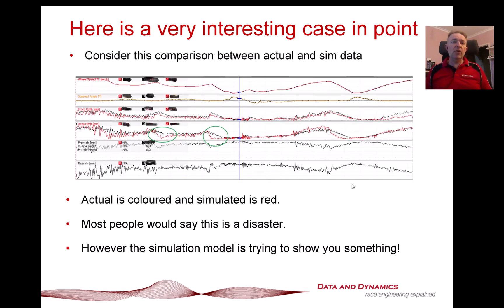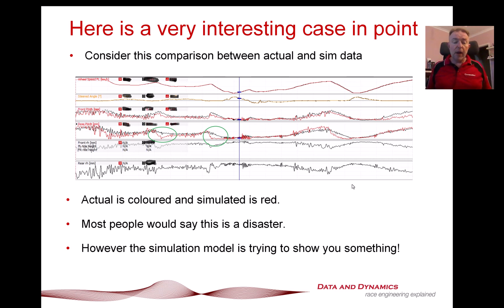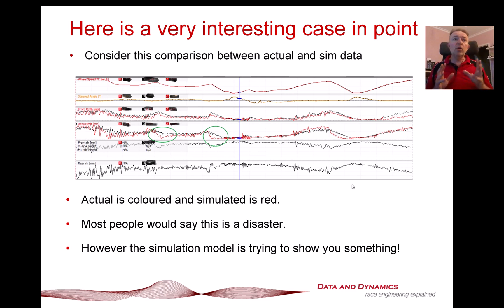So here's a really interesting case in point. This is some error validation work I did — because it's live data, I've redacted all the scalings and you're not seeing any numbers. So let me walk you through the traces: actual is colored, simulated is black. We've got speed, steered angle, front pitch, rear pitch, and the simulated front and rear ride heights — we're going to come back to that momentarily.